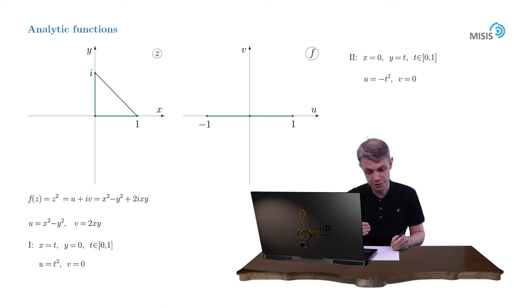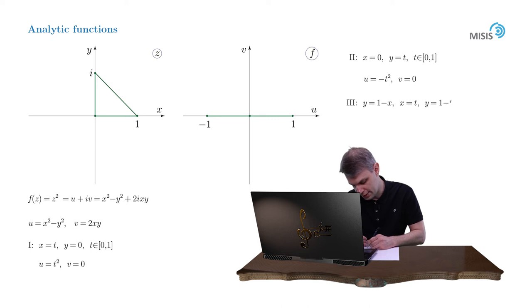And finally the hypotenuse. Its equation is y equals 1 minus x and we introduce a parameterization x equals t while y equals 1 minus t. And as before t belongs to the segment from 0 to 1. This way we obtain u equals 2t minus 1 while v equals 2t times 1 minus t.